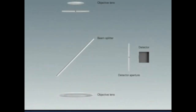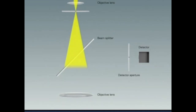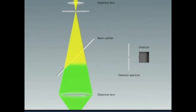The light comes from the objective lens and passes through a pinhole, and then is reflected onto the beam splitter going on to the objective lens on the other side. This is then reflected back onto the beam splitter and again passes through the pinhole towards the detector.